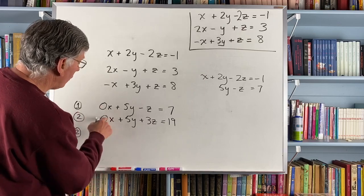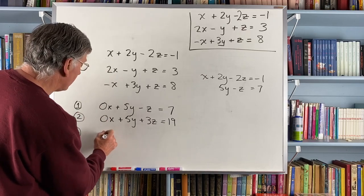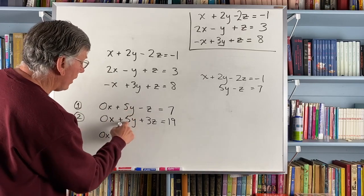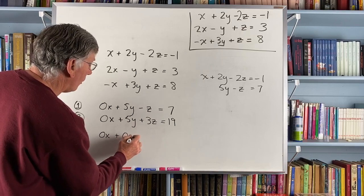So that becomes 0x minus 0x is still 0x. 5y minus 5y is 0y.